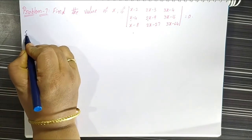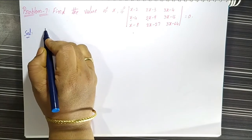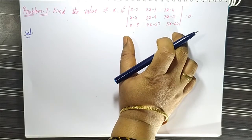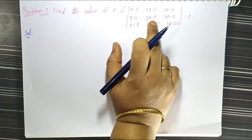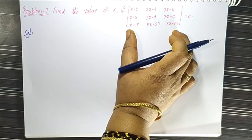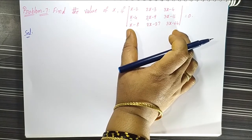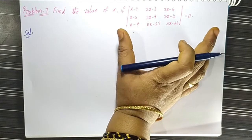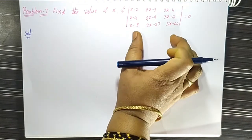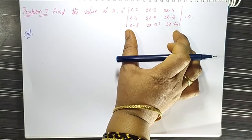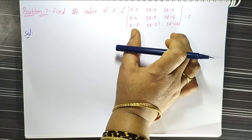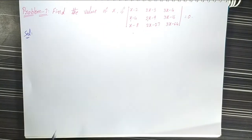Next go to the solution. We have to solve the solution by expanding the determinant, but this is a big process. Instead, we take the LHS of the given statement and apply some row operations on this determinant. After that we equate it to zero, then easily find out the x value.